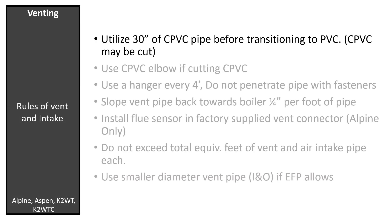The vent kit may be an option and consists of a 30-inch piece of cPVC pipe, a cPVC close radius elbow, PVC coupling for vent termination, a 90-degree elbow for air intake termination, and two rodent screens. Starting at the boiler, use all 30 inches of cPVC pipe. When needed, you can cut the cPVC pipe and install the cPVC elbow. If the pipe was cut, use the remaining cPVC before transitioning to PVC. Be careful to remove all cutting debris and clean the cut end of the pipe — this will keep the shavings out of the burner assembly.